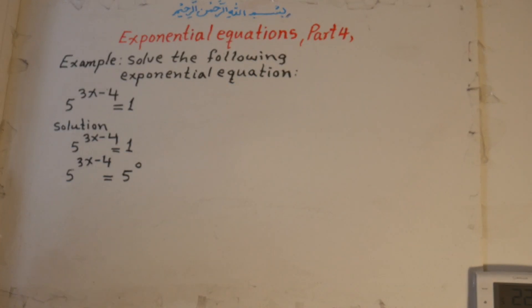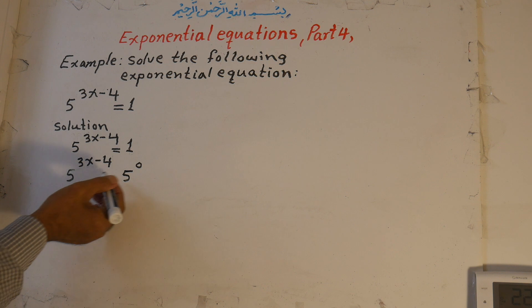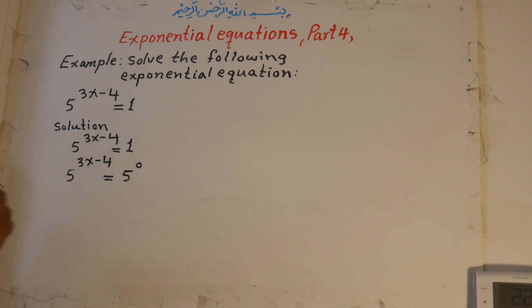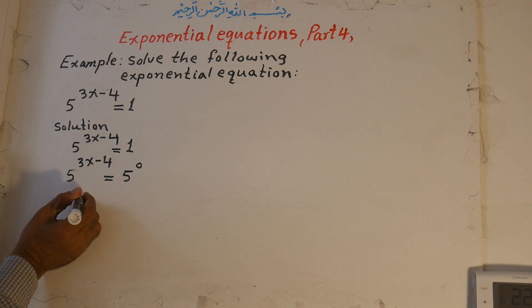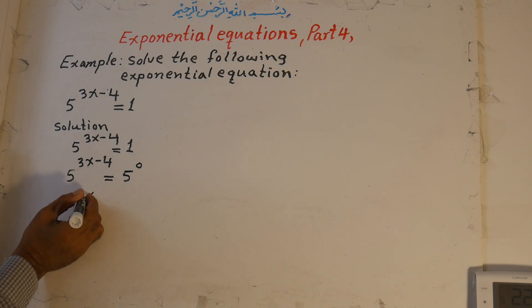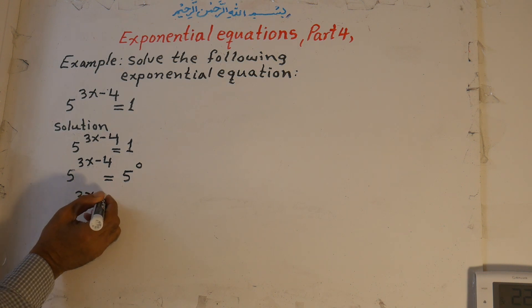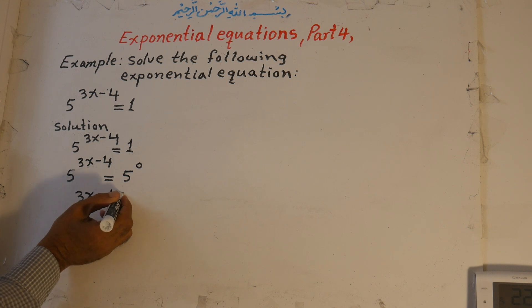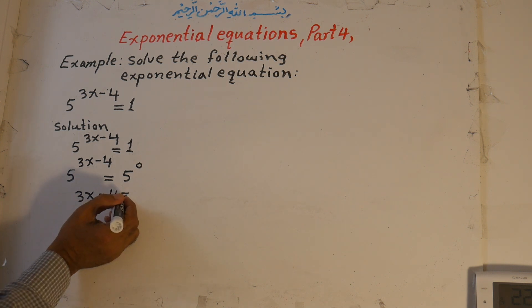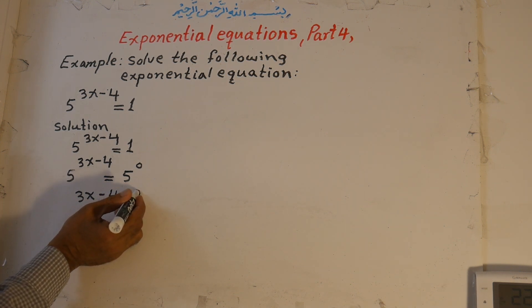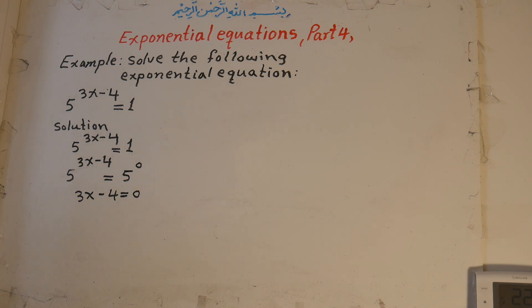Now both bases are 5. We can set the exponents equal to each other: 3x minus 4 is equal to 0.